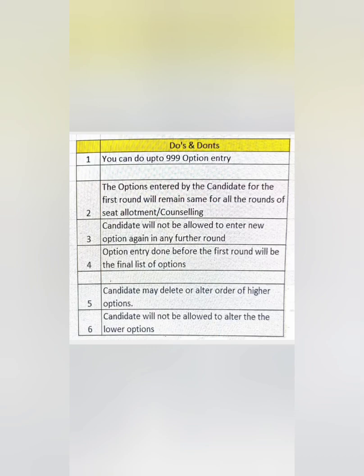Starting with the do's and don'ts of option entry, which will be applicable for all rounds — the mock round, first round, second round, and third round (also called second extended). You should understand this clearly, otherwise you will not get allotted any seats. First, you can do up to 999 option entries, so don't restrict to fewer options. Second, options entered during the first round of counseling will remain the same for all rounds.